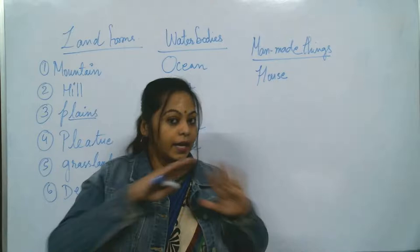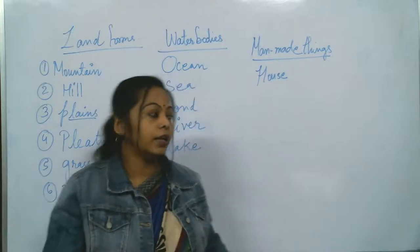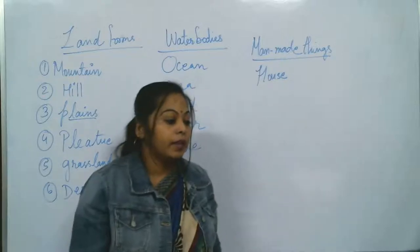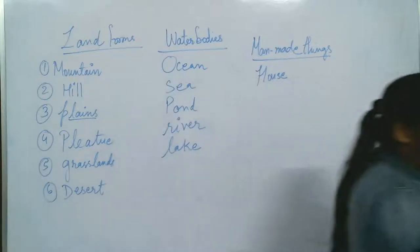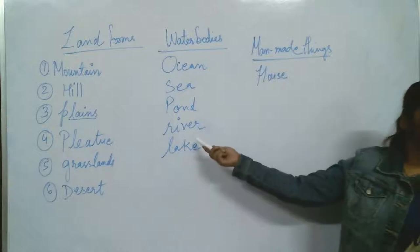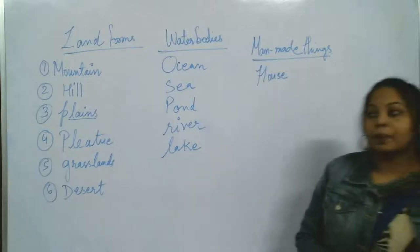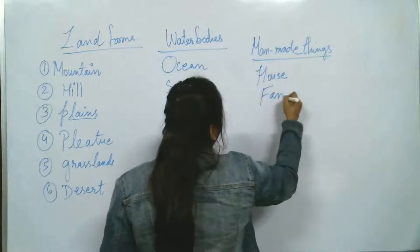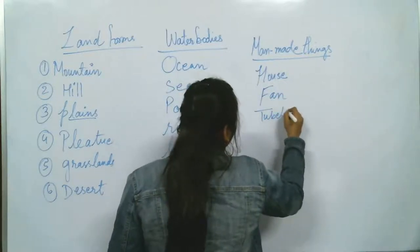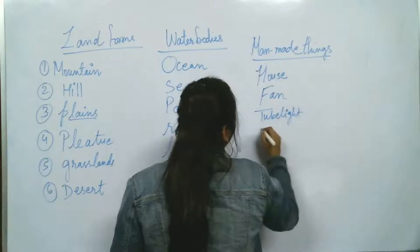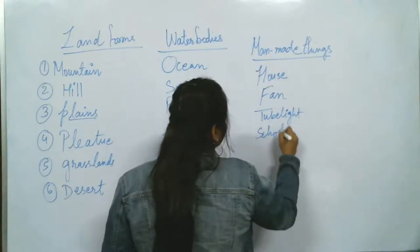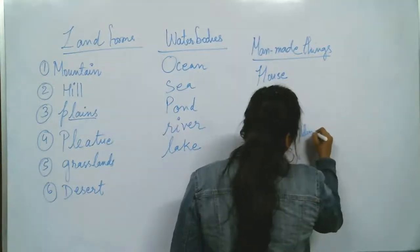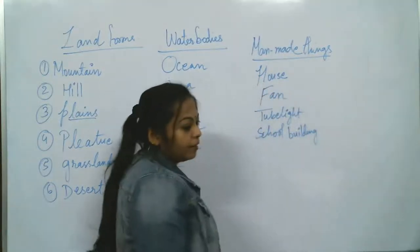A house is made by us, so it is man-made. Fan - whatever things you can see around you are man-made. Fan, tube light - school building - these are all man-made things. Did you understand? Now, sun, moon, star - these are natural things, found in nature.